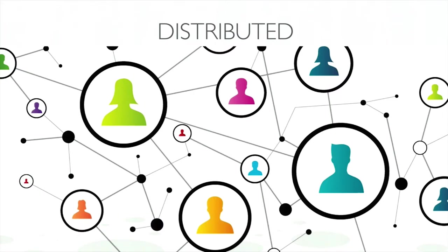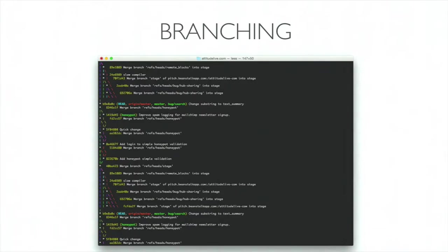This distributed nature is simply not possible in SVN. If you're on a plane with a 10-hour flight and you want to work on a bug, because you haven't got access to the centralized SVN server there's nothing you can do. You can do your changes and copy them to another file, then manually fix things up when you reconnect — but with Git it's just dead simple.